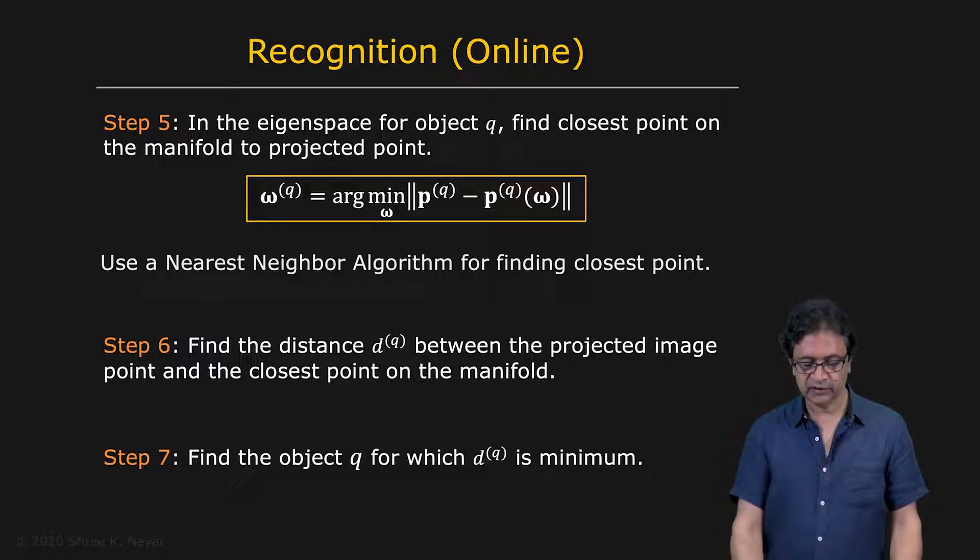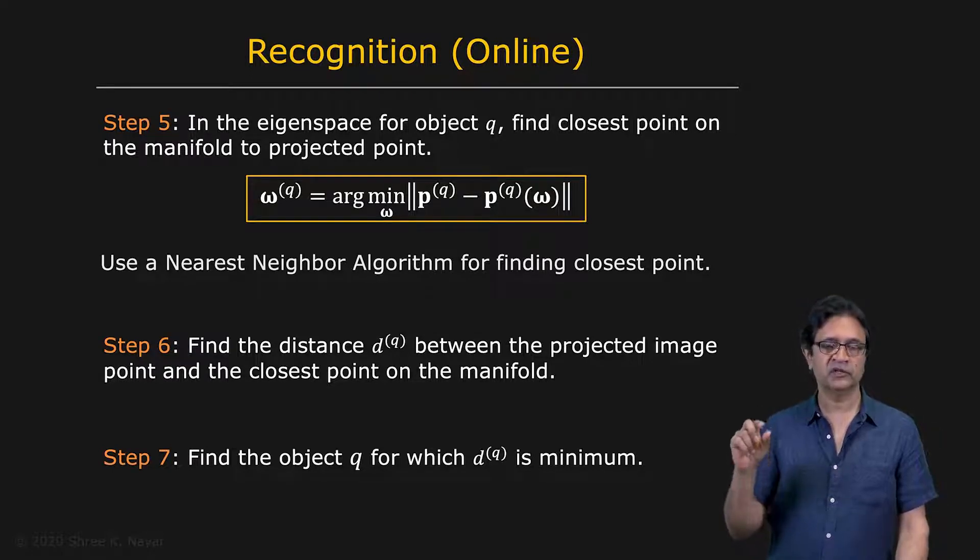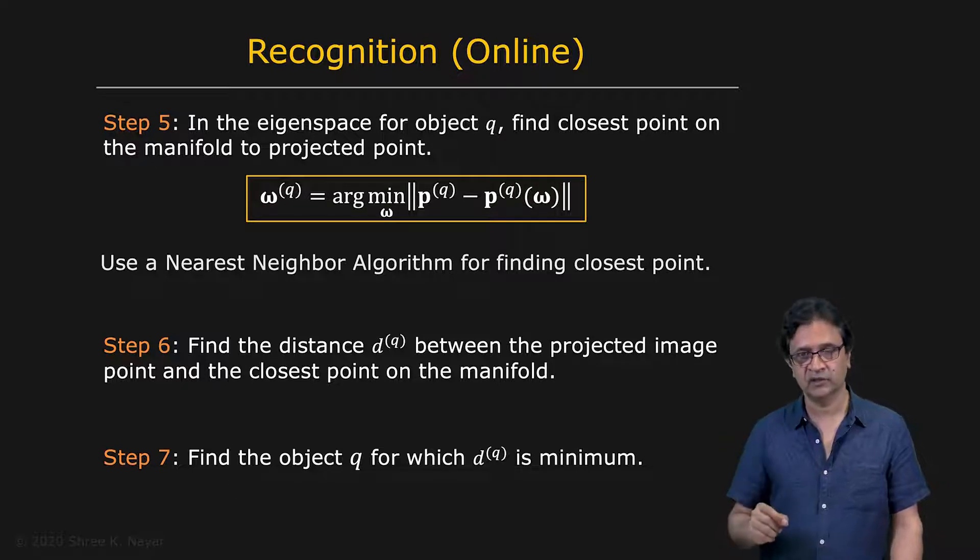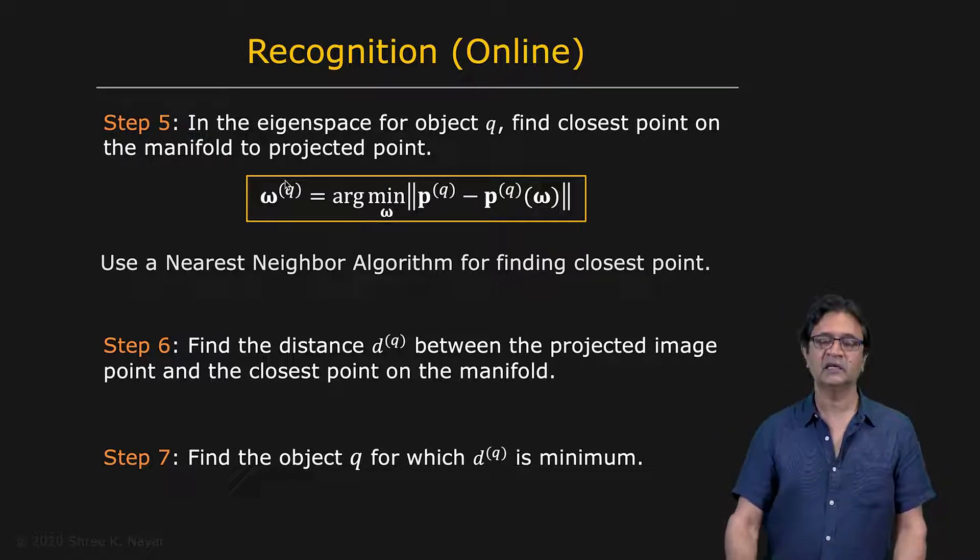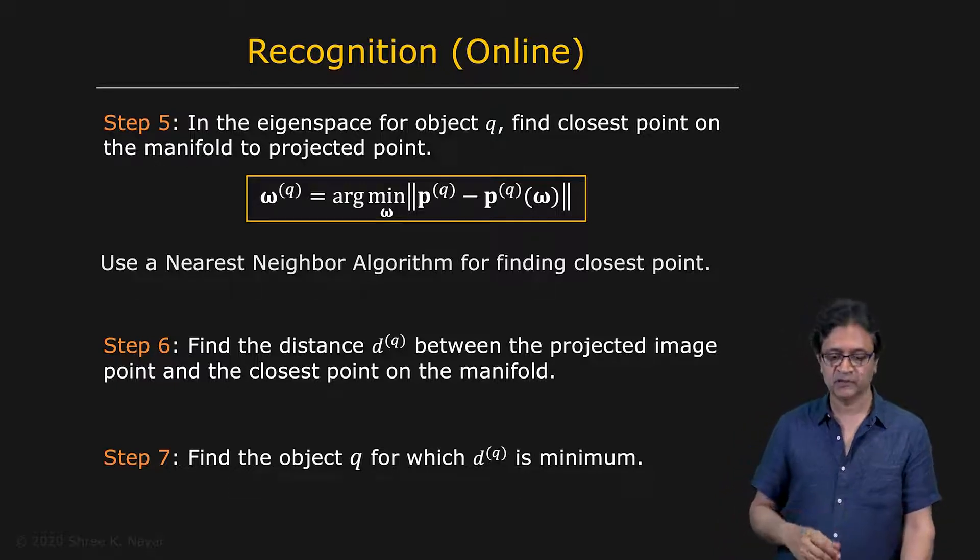That distance D is telling you how close the point is to the appearance model for that object. We do that for all the objects and find the object Q for which D is the minimum. Well, minimum is not sufficient. It should be minimum and really small. It should be very close to the manifold for us to declare that it is that object. If we know it is that object, we have found the object. We can also then go back and find the extrinsic parameter omega of the closest point. And that tells you in addition to which object it is, what the extrinsic parameters are. What the pose of the object is, perhaps what the illumination of the object is.